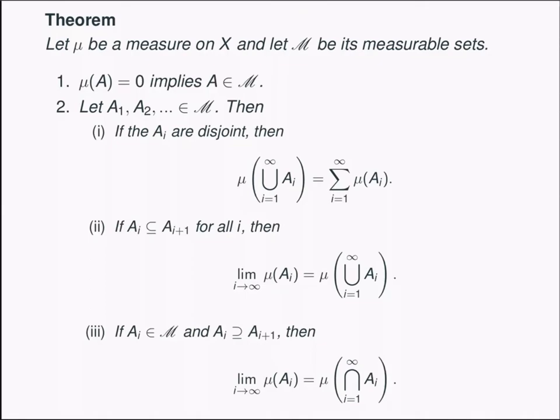So this is all standard so far from first-year measure theory. The point to take home is that while our measures will be defined for all sets, they behave nicely and in a more intuitive fashion on the smaller collection of measurable sets.